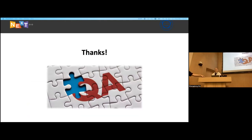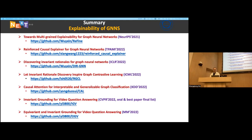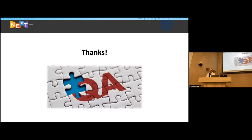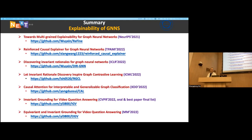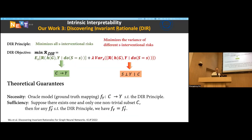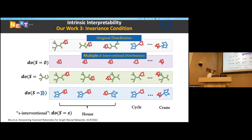Anybody? I have a question. Thanks for the great talk. So in the third work — a technical question — in the S-intervention operation, you mentioned combining sub-structures from several different instances. As I see from the picture, we need to attach a small sub-structure to a larger sub-structure. How do we decide how to combine the two subgraphs, and does the technique of combining influence the outcome?